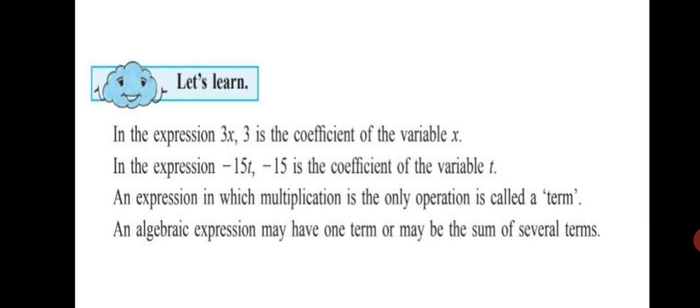Let's learn. In the expression 3x, 3 is the coefficient of the variable x. So, the number is called the coefficient and the alphabet is called the variable. In the expression minus 15t, minus 15 is the coefficient of the variable t. An expression in which multiplication is the only operation is called a term.